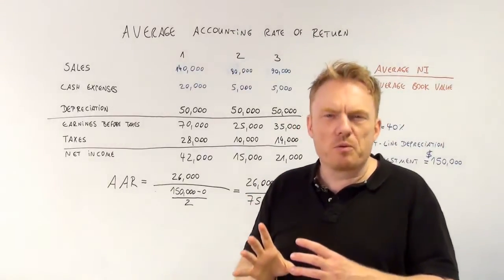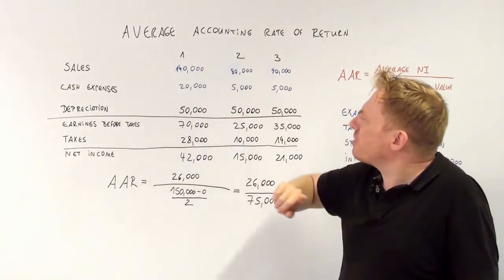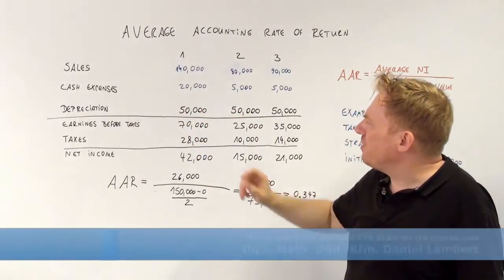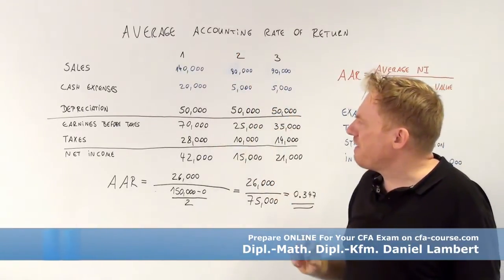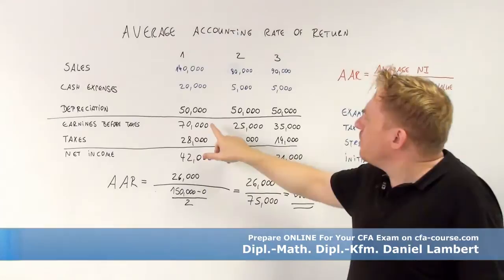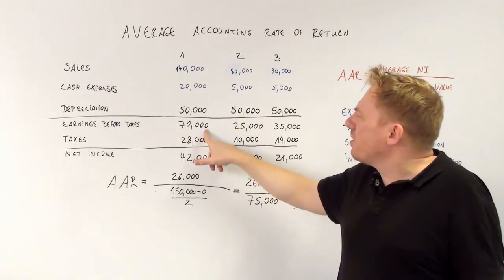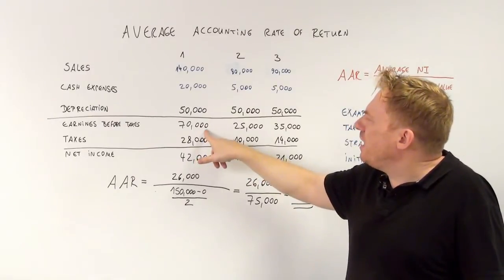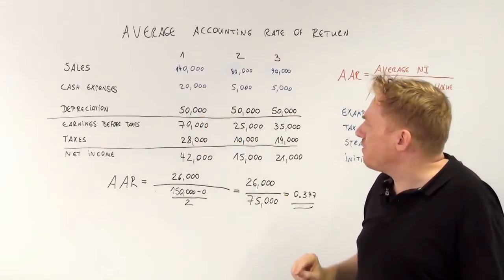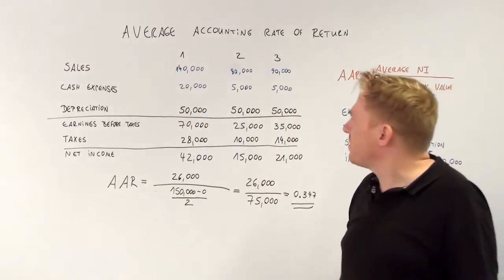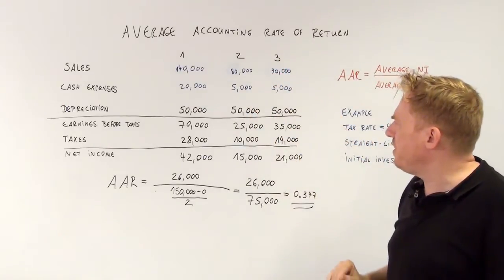Earnings before taxes are equal to sales minus cash expenses minus depreciation, which means $140,000 minus $20,000 minus $50,000 equals $70,000. Before paying taxes there is an earning of $70,000 in the first year and $25,000 in the second, because it's $80,000 minus $5,000 minus $50,000.